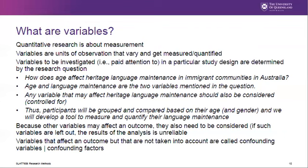Variables to be investigated — those that we pay attention to in our particular study design — are determined by the research question. So if we look at the effect of age on heritage language maintenance in immigration communities in Australia, we can determine that age and language maintenance are the two variables mentioned in this question. There is no indication of gender or literacy or any other variable. However, if we know or assume that there might be an effect, those variables should also be considered. The participants in our study will be grouped and compared based on their age, but in this case not based on their gender.